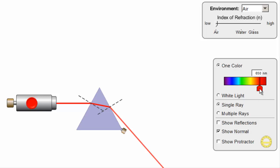If I change the color of the laser, we're going to see that the angles change a little bit. See how this out here is not the same?